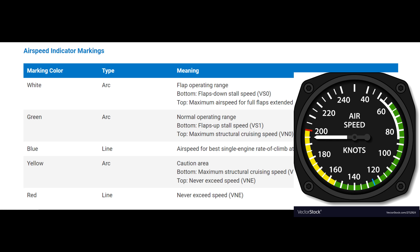The bottom of the green arc is the Flap Up Stall Speed. The green arc represents the normal operating range up to the maximum structural cruising speed. The red line is the maximum flight speed — never exceed speed.